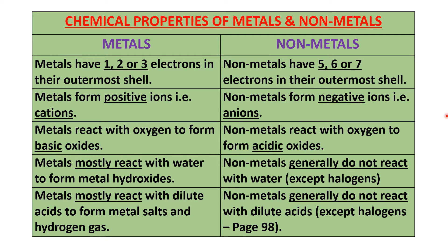Now, having learned about the chemical properties of metals, we will now try to contrast and compare the chemical properties of metals and non-metals. When we began this lesson, we compared the physical properties of metals and non-metals. Now we are trying to compare the chemical properties of metals and non-metals.